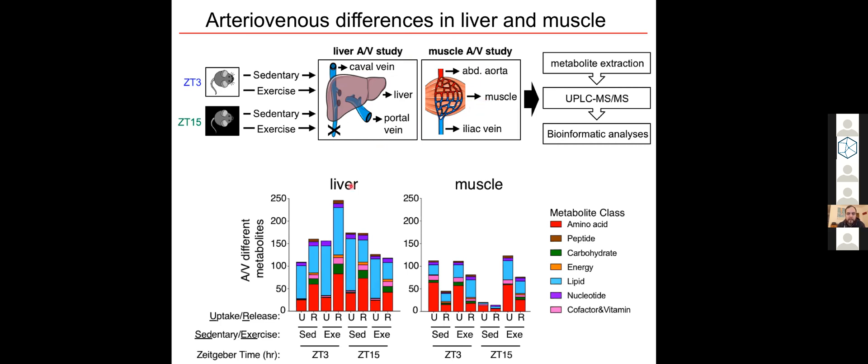This allows us to see that liver is really a net exporter of metabolites, meaning that it takes up fewer metabolites than it's releasing. And it releases the most metabolites after exercise in the morning. On the other hand, muscle is a net importer of metabolites, so it's taking up more than it's releasing.